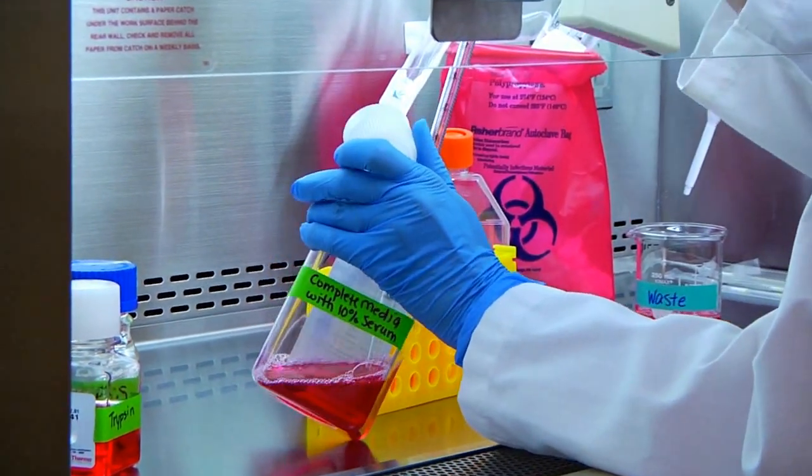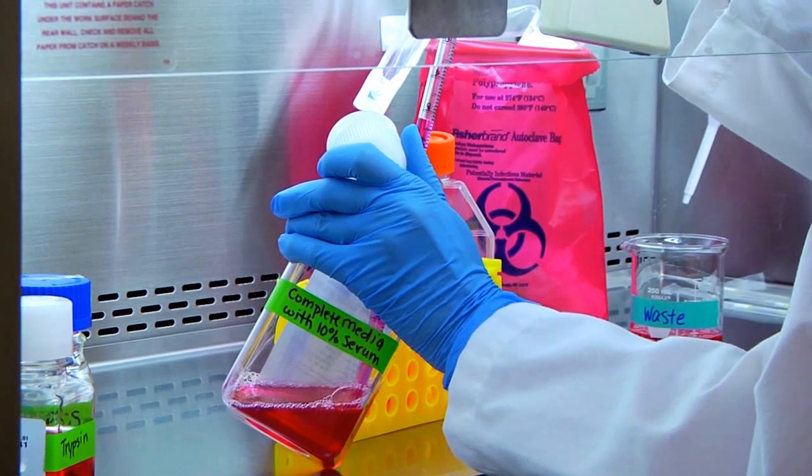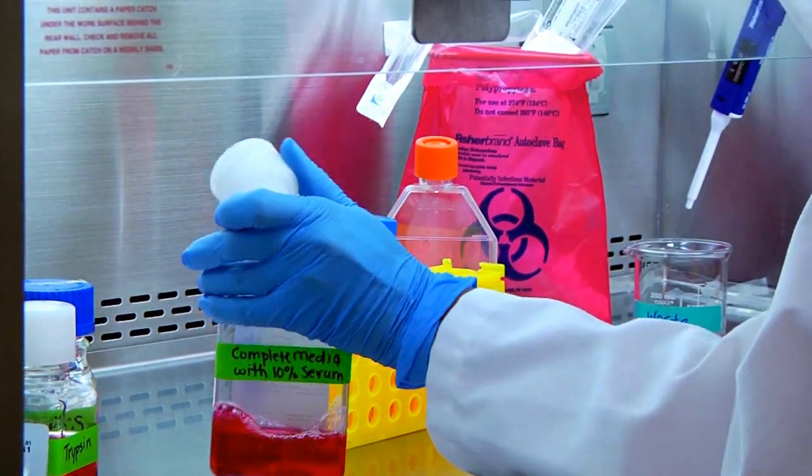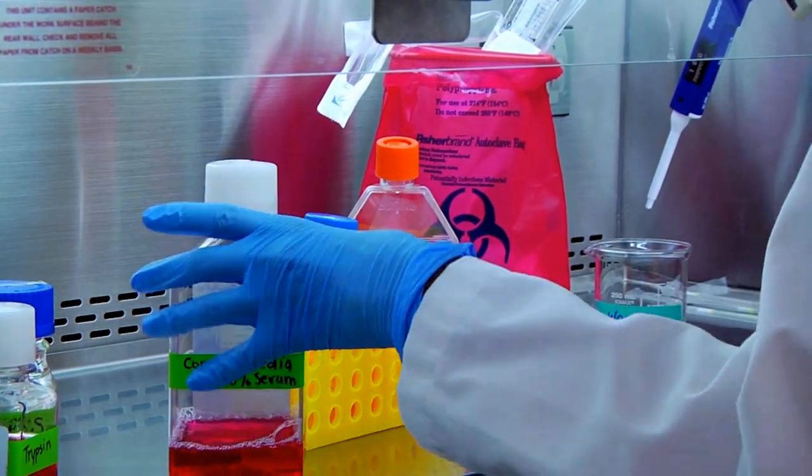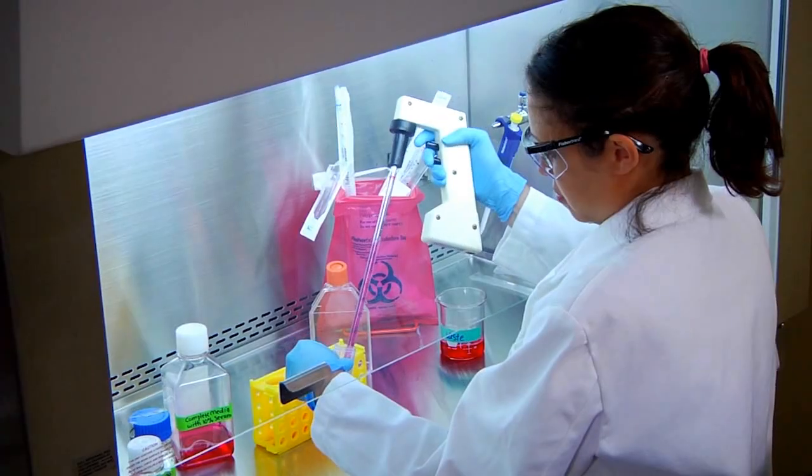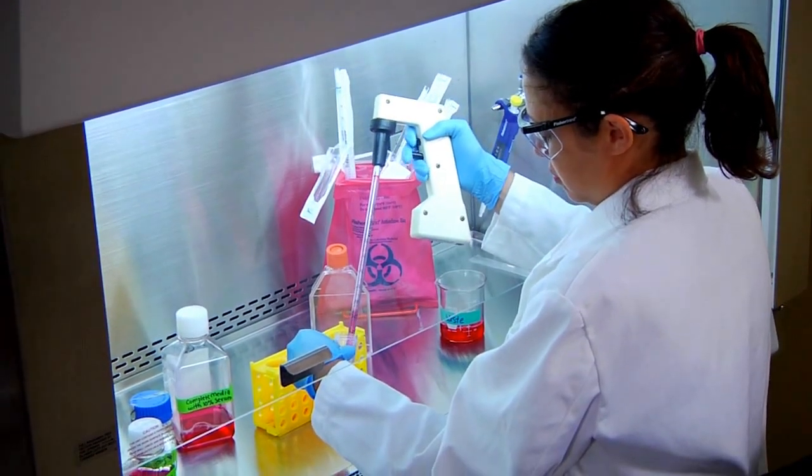Add 10 milliliters of fresh pre-warm culture medium to the tube. Re-suspend your cell pellet by pipetting up and down.